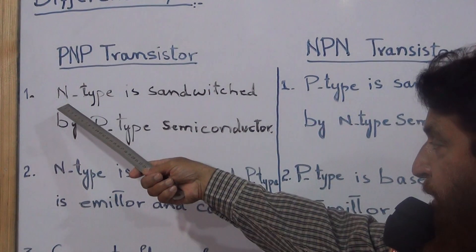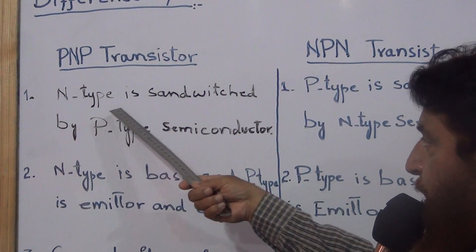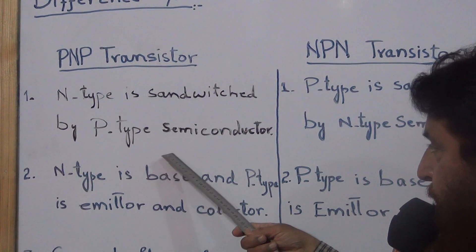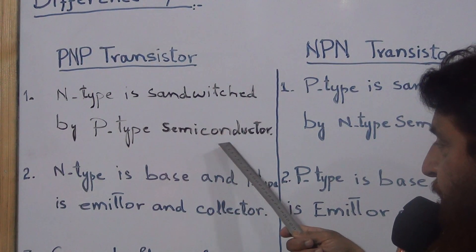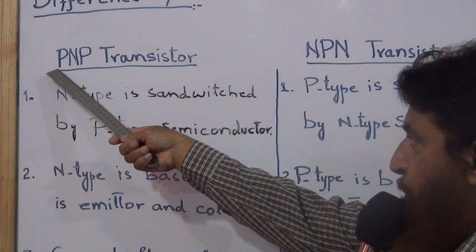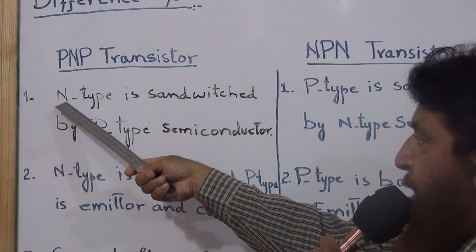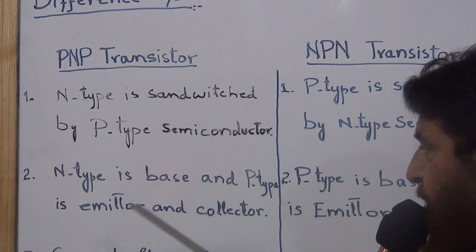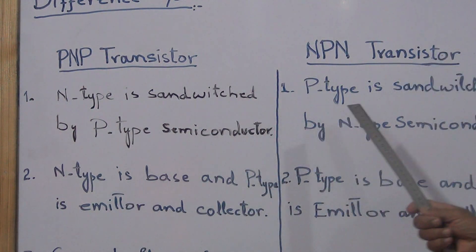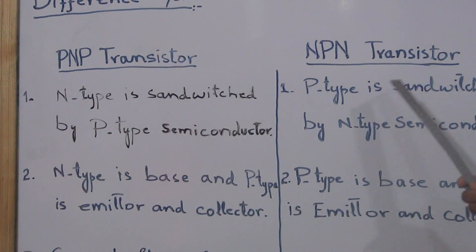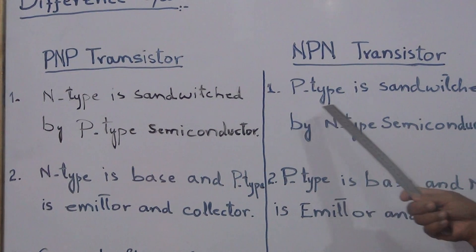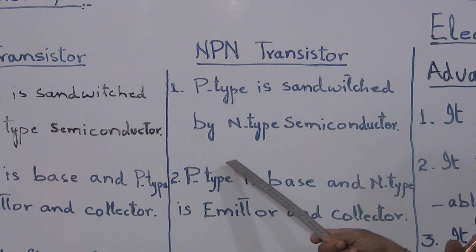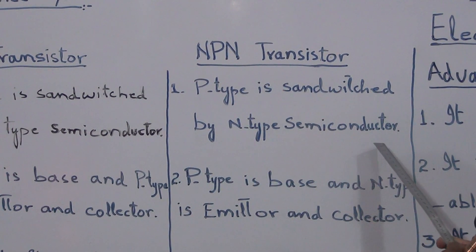First of all, in PNP transistor, N-type is sandwiched by P-type semiconductor. In NPN transistor, P-type is sandwiched by N-type semiconductor.